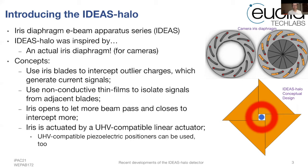We use non-conductive thin films to isolate signals from adjacent blades so that they become independent measurements from each of the four blades. The iris can open and close: when it opens it lets more beam pass, and when it closes it intercepts more toward the core, until the user decides to stop the motion. The iris is actuated by a USB-compatible linear actuator with high-precision motion to precisely control the aperture. We can also use USB-compatible piezoelectric positioners for even higher precision, depending on measurement requirements.